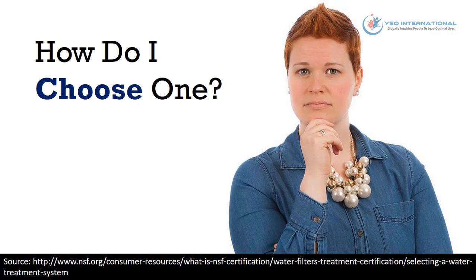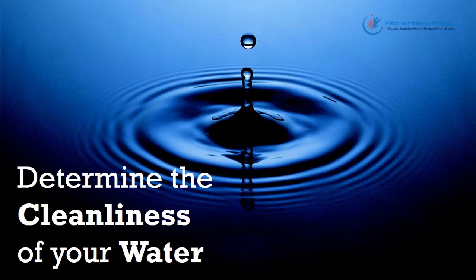There are so many water treatment systems available in the market. You might be wondering, how do I choose one? The first thing you need to do is to determine the cleanliness of your water, and this can be achieved by getting a water quality report from your local utility or authority. If this is not possible, you can have your water independently tested.